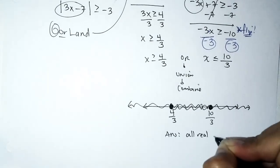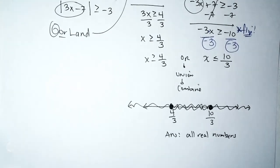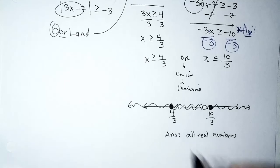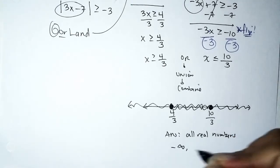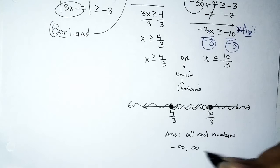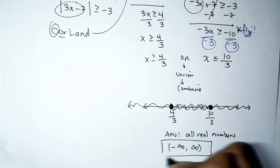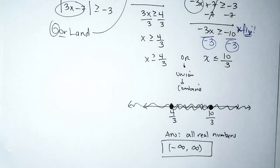In interval notation, all real numbers is written as (−∞, ∞). The solution is the set of all real numbers.